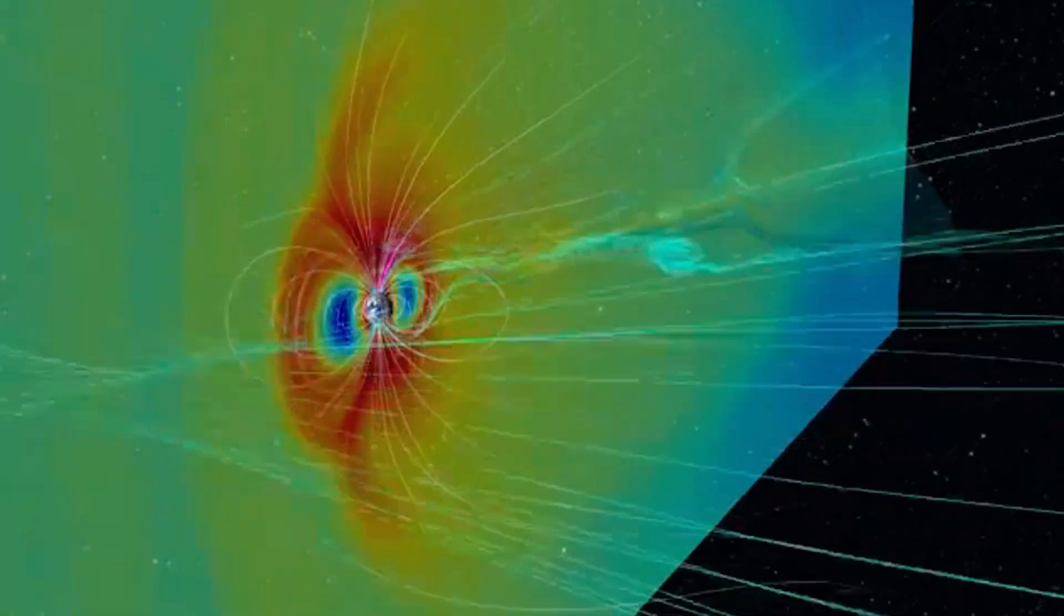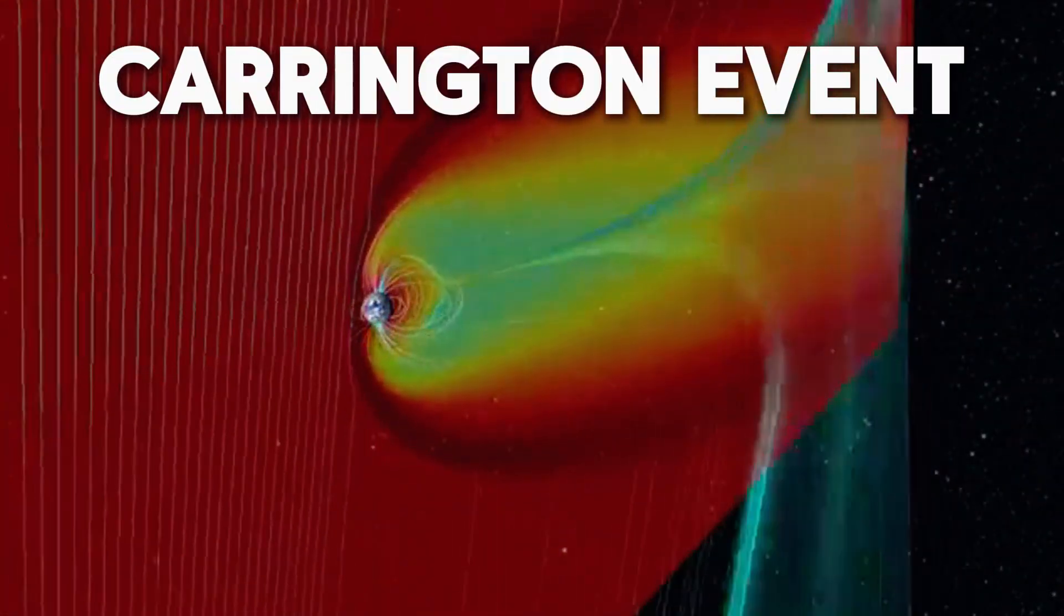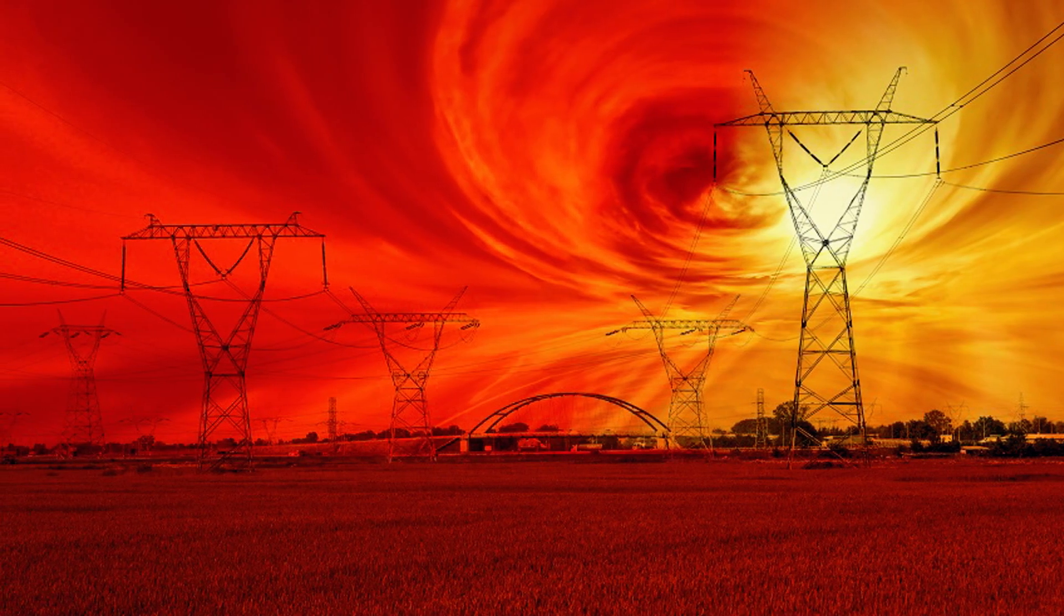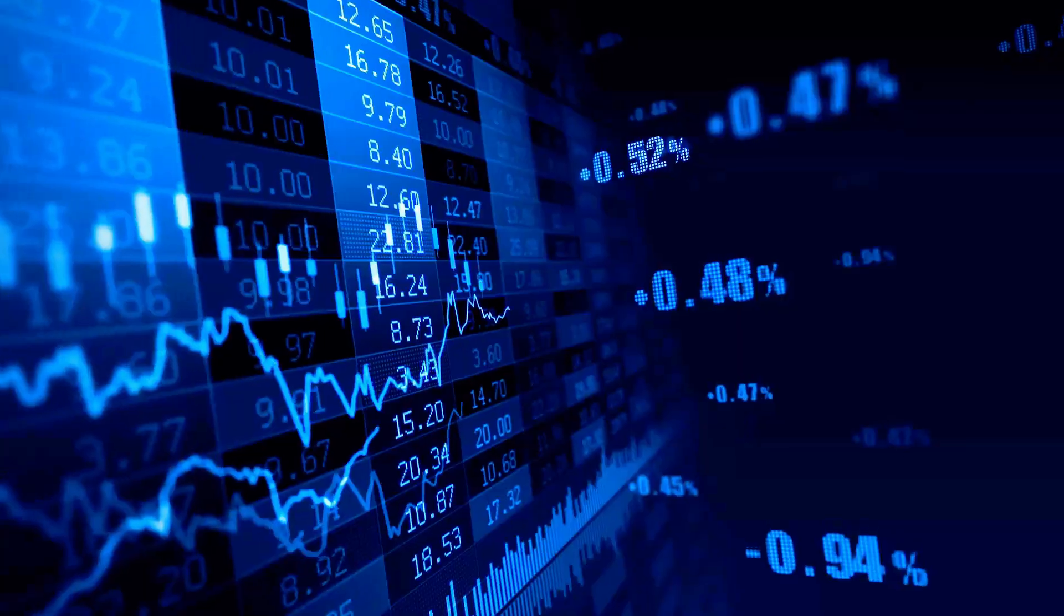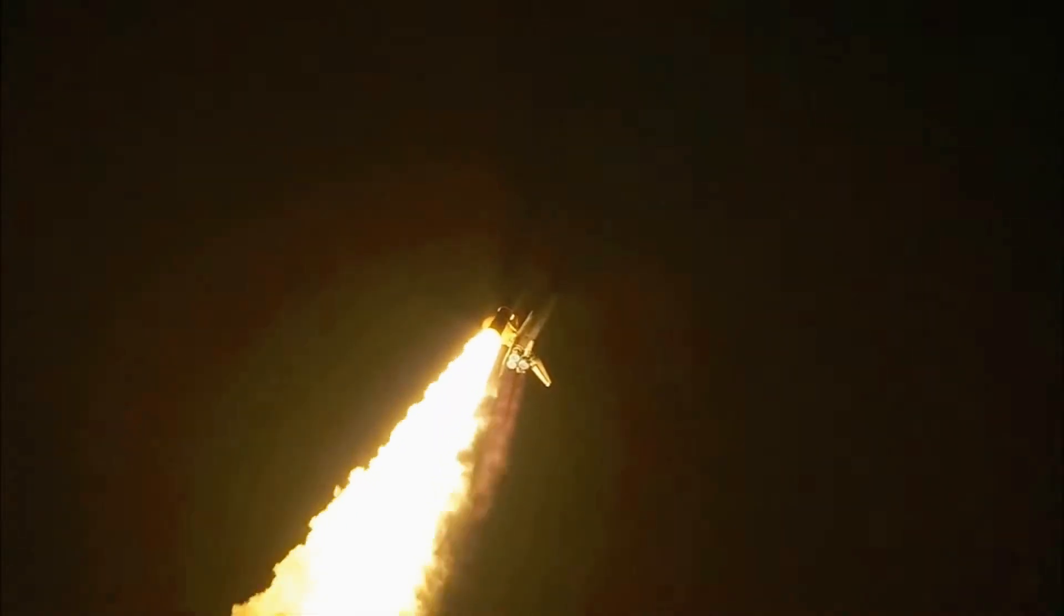This has already happened before. In 1859, a powerful solar storm, known as the Carrington Event, struck Earth, causing telegraph wires to spark and catch fire. If a storm of that magnitude hit today, the damage could knock out global communications, shut down banking systems, and even disable spacecraft.